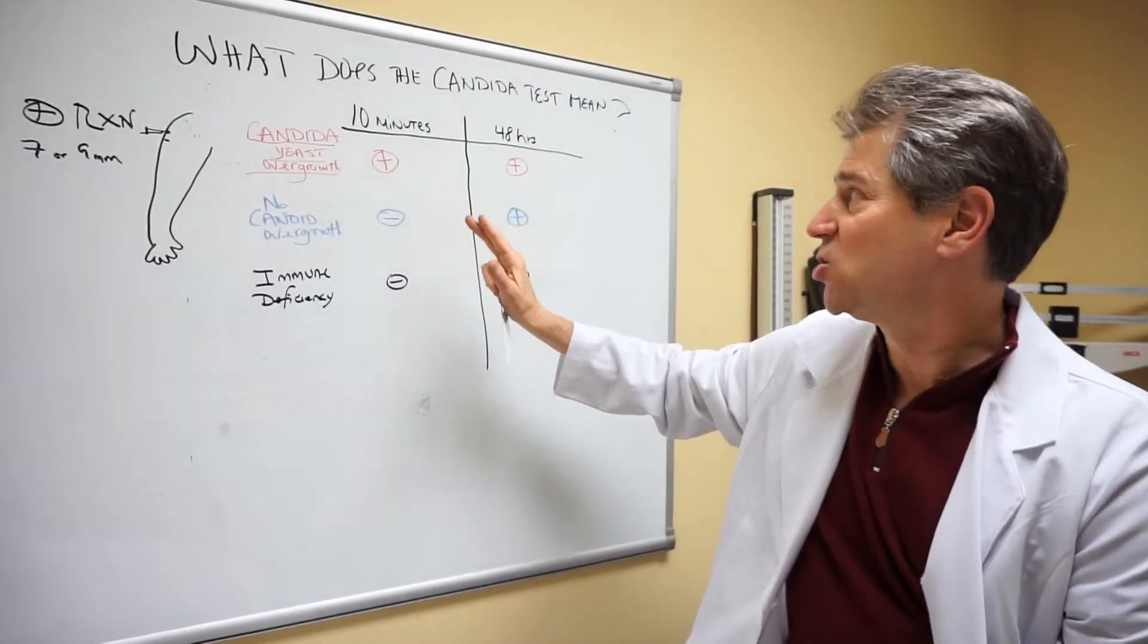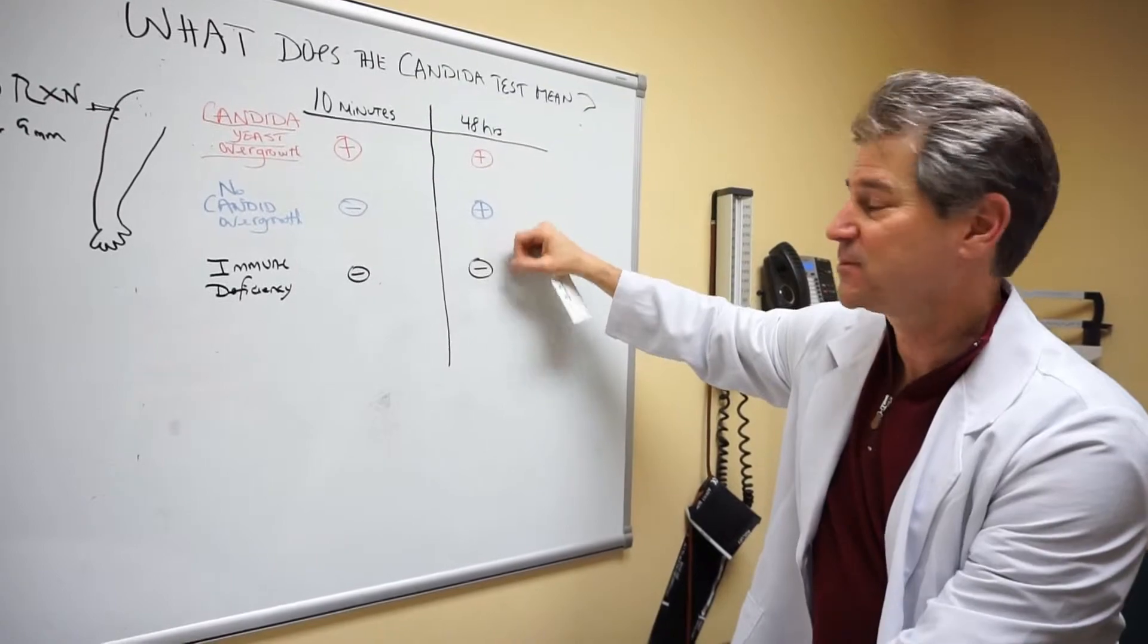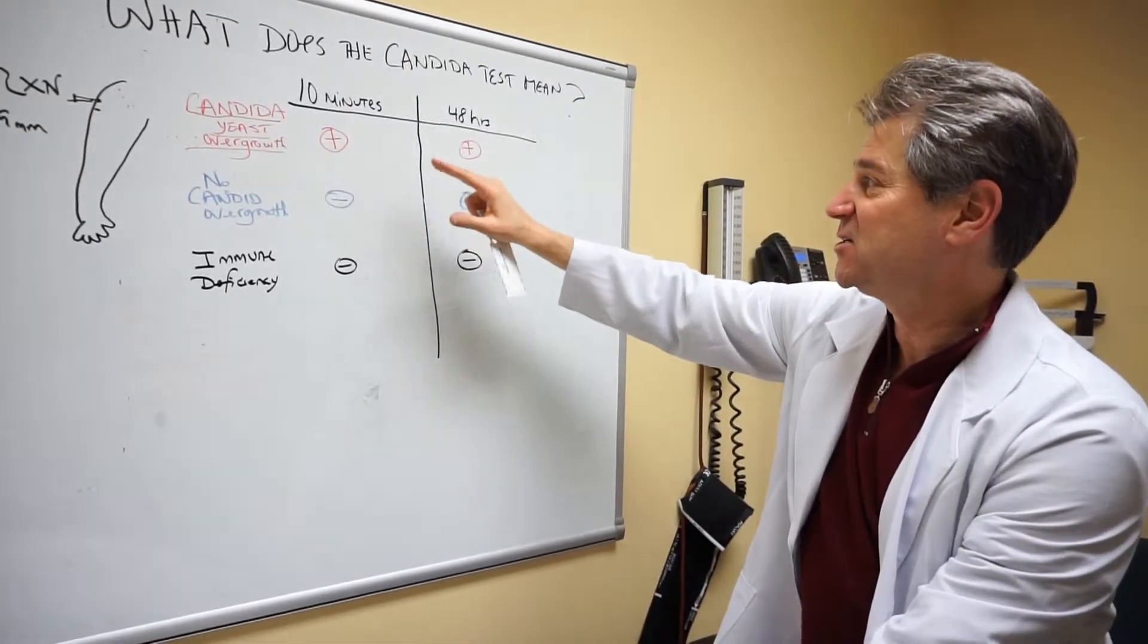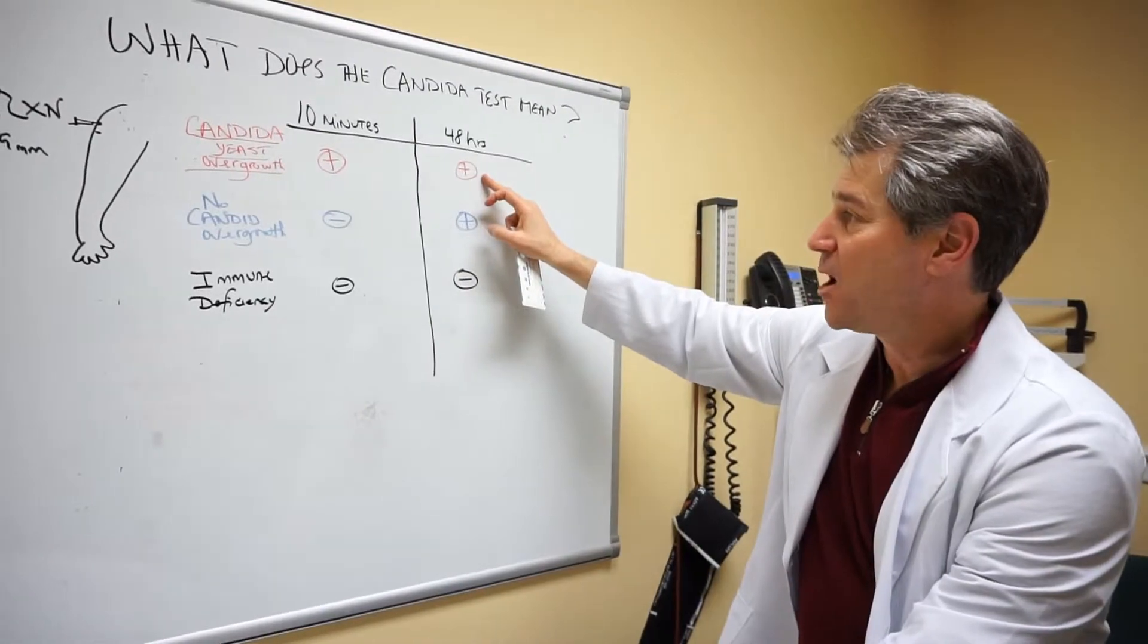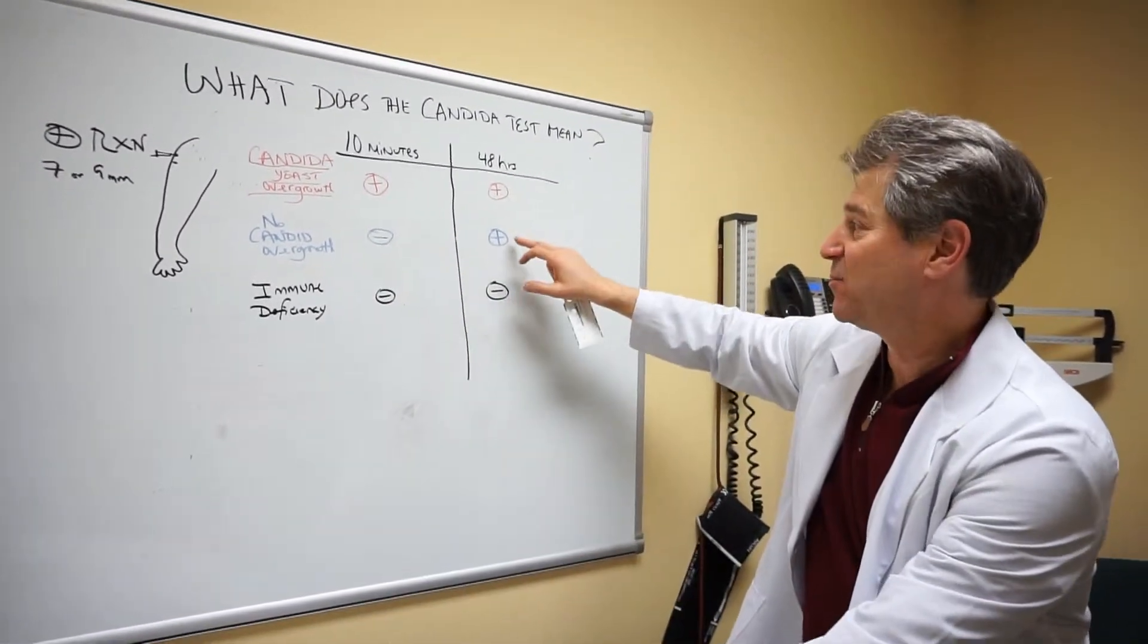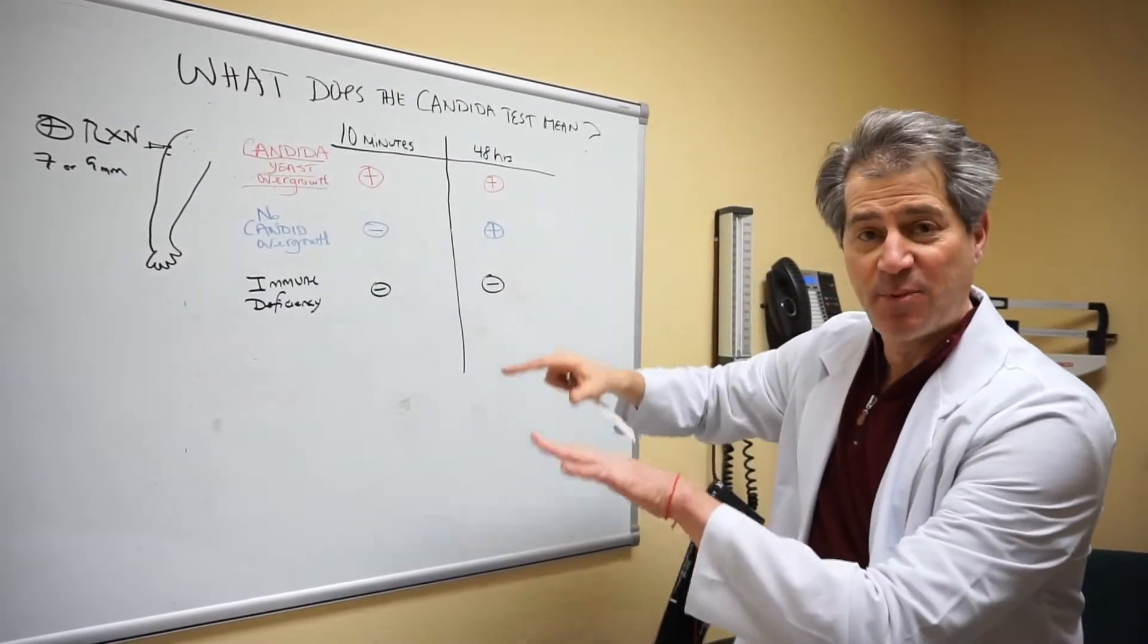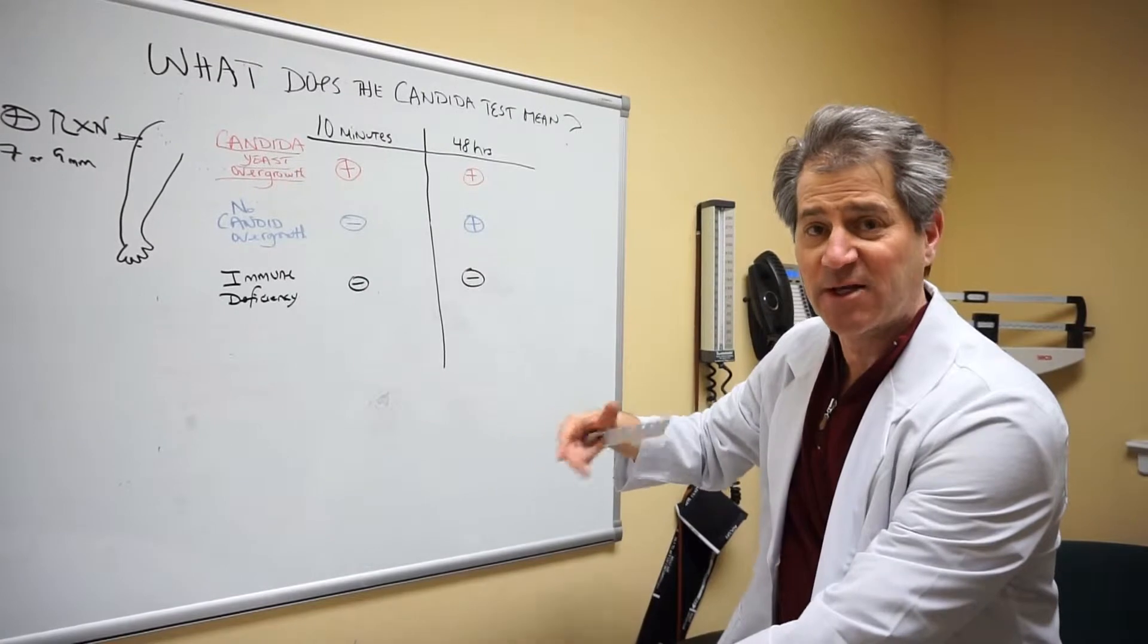Now let's take a look and see what happens at 48 hours or two days later. A patient with candida yeast overgrowth will still have that positive reaction. A patient with normal candida balance in their system will have a positive reaction, meaning their body has this delayed immune reaction, which is normal.